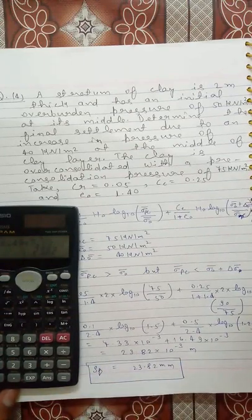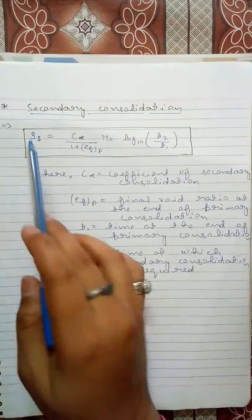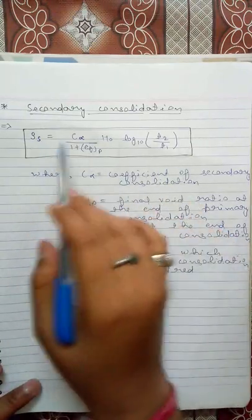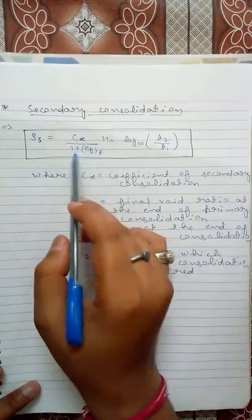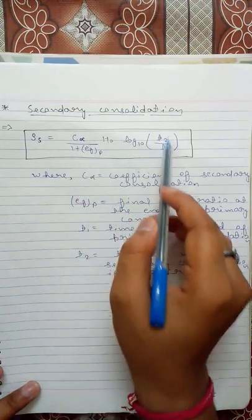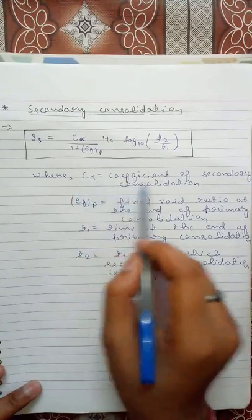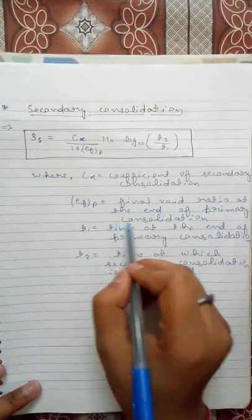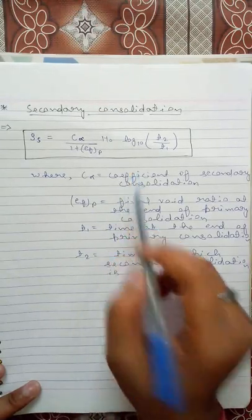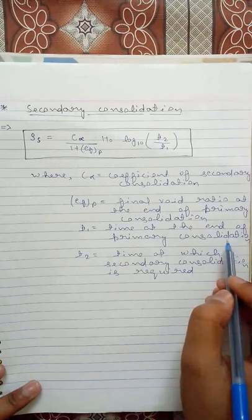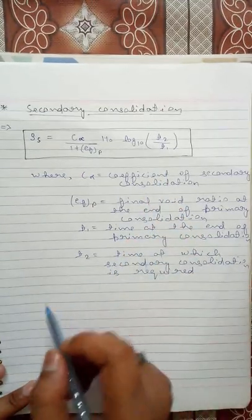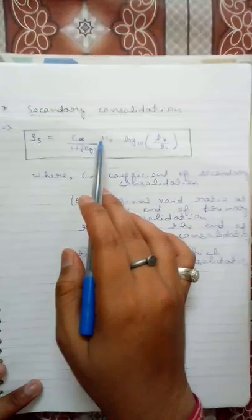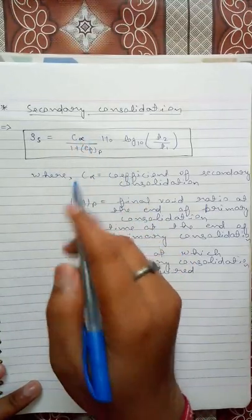For the calculation of settlement due to secondary consolidation, we use: ρs = Cα/(1+efp) · H₀ · log₁₀(t2/t1), where Cα is the coefficient of secondary consolidation, efp is the final void ratio at the end of primary consolidation, t1 is the time at the end of primary consolidation, and t2 is the time at which the secondary consolidation settlement is required.